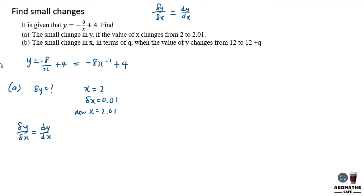You know that delta y over delta x equals dy/dx, so to find delta y, it will be dy/dx times delta x. To find dy/dx: dy/dx is negative 8 times negative 1, giving 8x to the power of negative 2, which equals 8 over x squared.